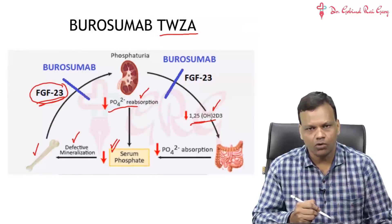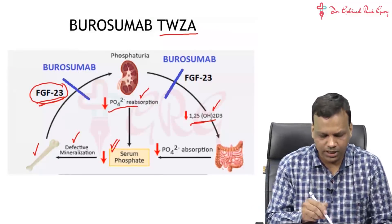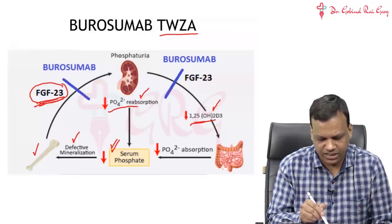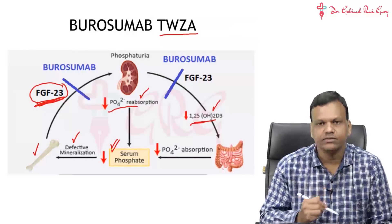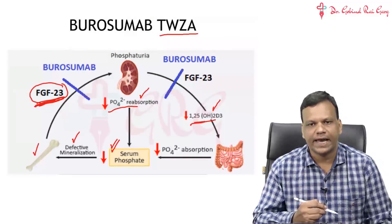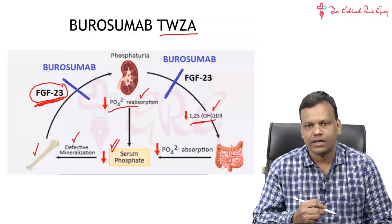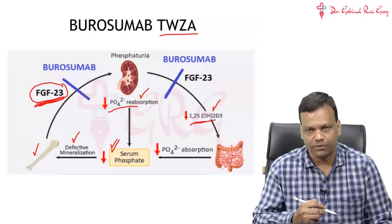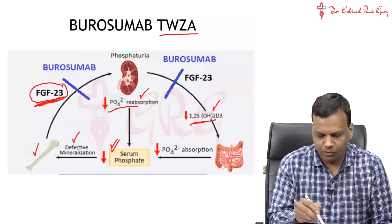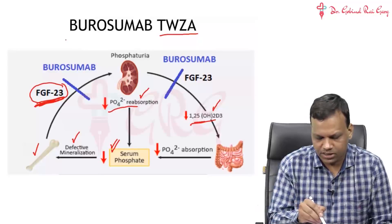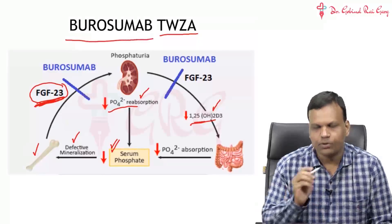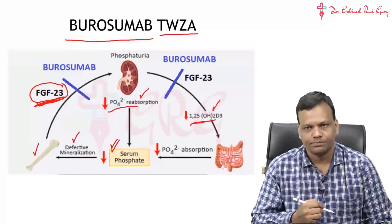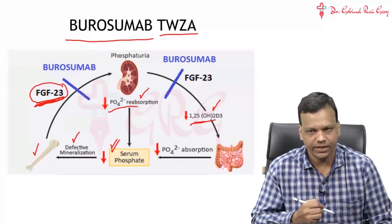We have developed a monoclonal antibody against FGF23 to treat X-linked hypophosphatemia, and that monoclonal antibody is called Burosumab.